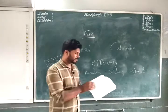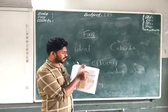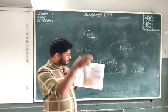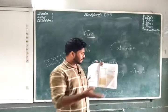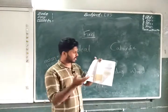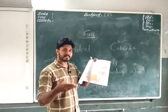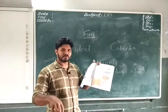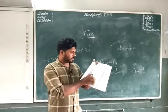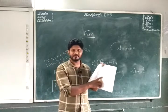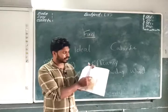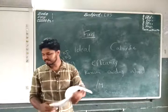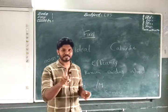Let us check the table of calorific values of different fuels in your textbook. Cow dung cake is 6,000 to 8,000 kilojoule per kilogram. Going further down the table it increases — 45,000 to 50,000 for methane and CNG, 55,000 for LPG, 35,000 to 40,000 for biogas, and hydrogen has the highest at 1,50,000 kilojoule per kilogram.